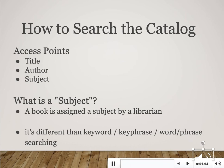The library catalog has three primary access points, or three ways to search for library materials: by title, by author, or by subject. A search by title or author is pretty self-explanatory. I'd like to spend a little bit of time talking about the third access point, which is searching by subject.